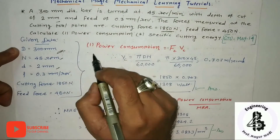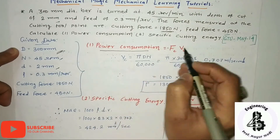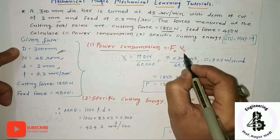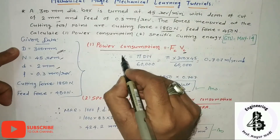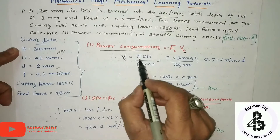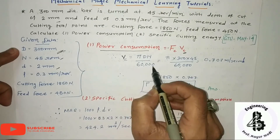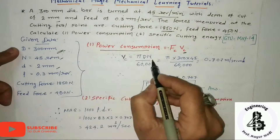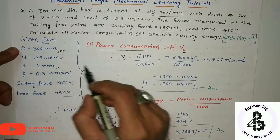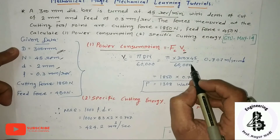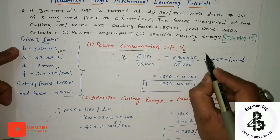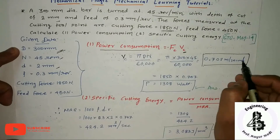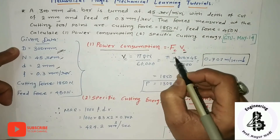For power consumption, the formula is: power equals cutting force multiplied by cutting velocity. First, I find the cutting velocity Vc using the formula π·D·N divided by 60,000. Substituting D = 300 and N = 45, we get Vc = 0.707 meters per second.